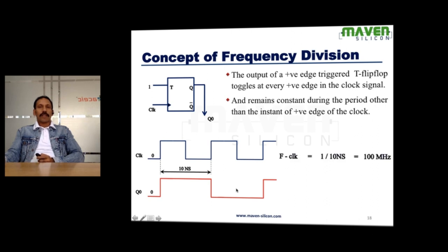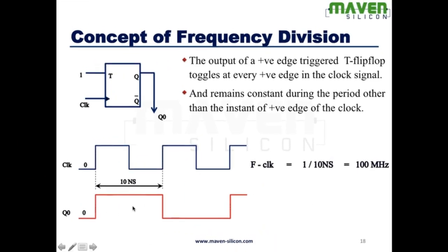Now, you compare the frequency of this output with the frequency of the clock. Here, the clock period is 10 nanoseconds. So, frequency of the clock is 1 by 10, which equals 100 MHz. You know how to calculate the clock frequency. Now, you calculate the frequency of this output. The time period of the output Q0 is 20 nanoseconds. So, the frequency of Q0 is 1 by 20, 20 nanoseconds, which equals 50 MHz. So here, the frequency of this Q0 is 1 by 2 of the frequency of the clock.